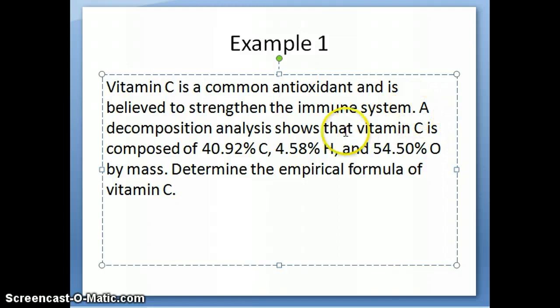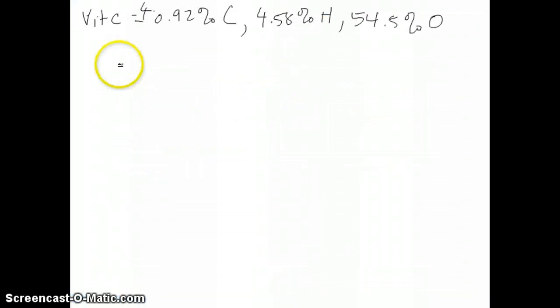A decomposition analysis of a mock vitamin C sample shows that it is composed of 40.92% carbon, 4.58% hydrogen, and 54.5% oxygen by mass. The question is, what is the empirical formula of vitamin C? This is the problem where we were told that if we have vitamin C and it has the following percent composition, what is the empirical formula?